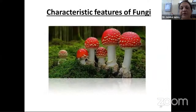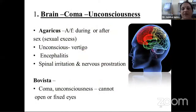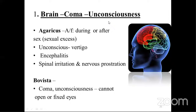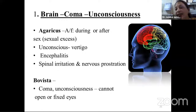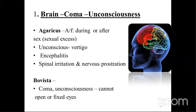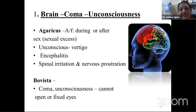Coming to individual characteristic features of fungi. For CNS affection — brain features of coma and unconsciousness. The major two drugs are Agaricus and Bovista. Agaricus: main ailment from sexual excess or poison, leading to unconsciousness, vertigo, spinal irritation, nervous frustration, etc. Encephalitis is also indicated for Agaricus. In Bovista, there is unconsciousness and they cannot open or have fixed eyes.